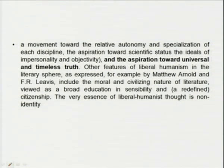For Kantian science, knowledge is no longer extracted from the 'thing in itself,' which remains fundamentally unknowable — rather, science produced knowledge of the phenomena of the world. This movement towards the relative autonomy and specialization of each discipline, the aspiration towards scientific status, the ideals of impersonality and objectivity — even T.S. Eliot talks about it — and the aspiration towards universal and timeless truth: this is the core point in liberal humanism. One looks into a text for timeless, universal truth.